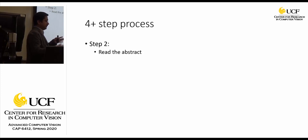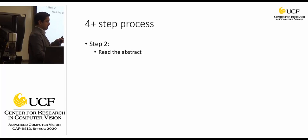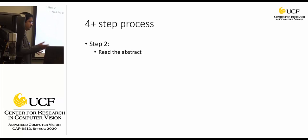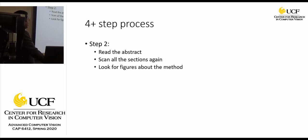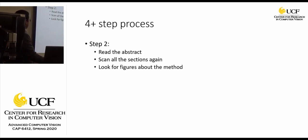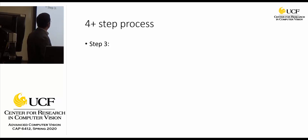Step two: read the abstract. The abstract is small, but authors may spend as much time writing the abstract as writing the method itself. If the paper is well written, you'll understand most of it just from the abstract. After reading the abstract, scan the sections and figures — in most computer vision papers there are many figures explaining the method. Reading the captions and the conclusion alongside the abstract will give you a strong overview of what they are promising.